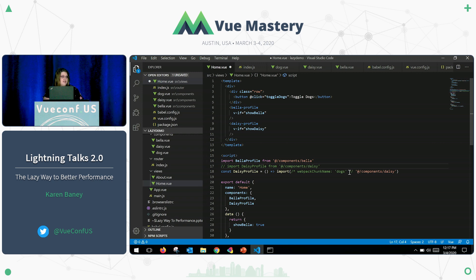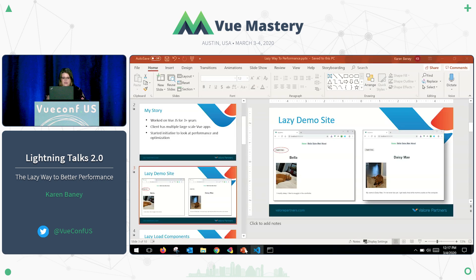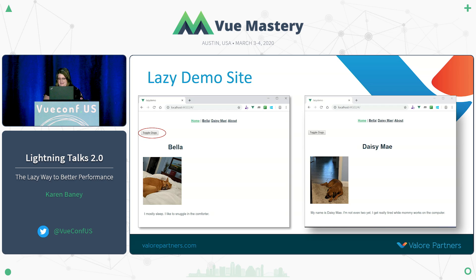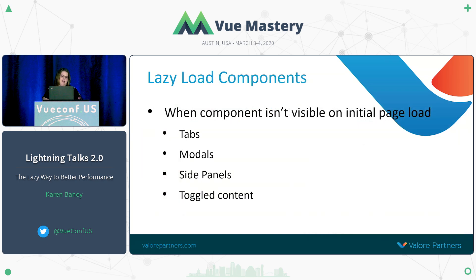Otherwise, Webpack just assigns whatever it thinks, and when you start to look at your dist folder, you don't know what package that is. Or if you're trying to do bundle analysis, you don't know which thing to look at. So it's a good idea to name your chunks. Some typical things that are good candidates for lazy loading components are tabs, modals, side panels, and toggled content.